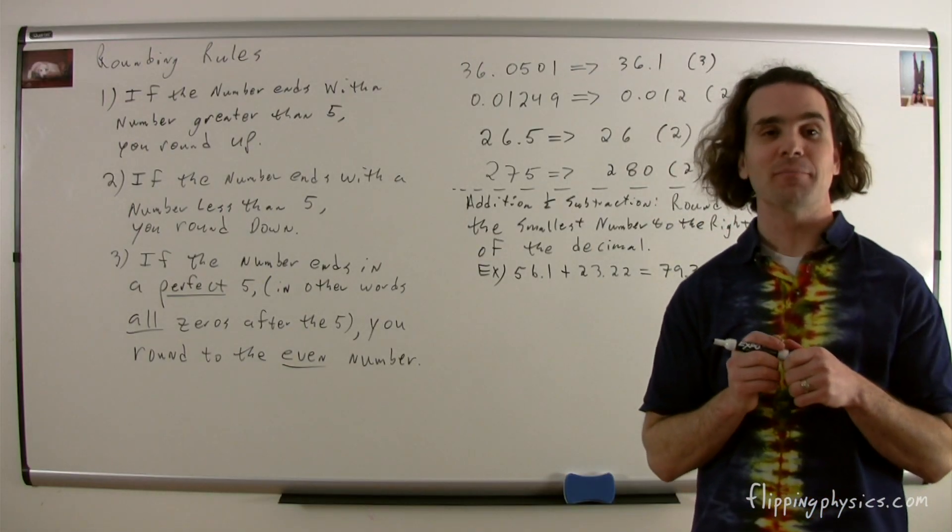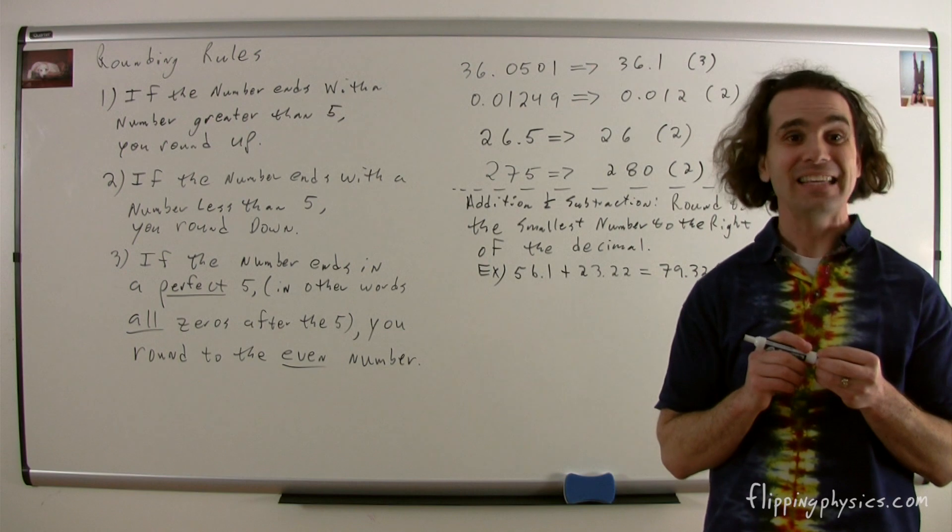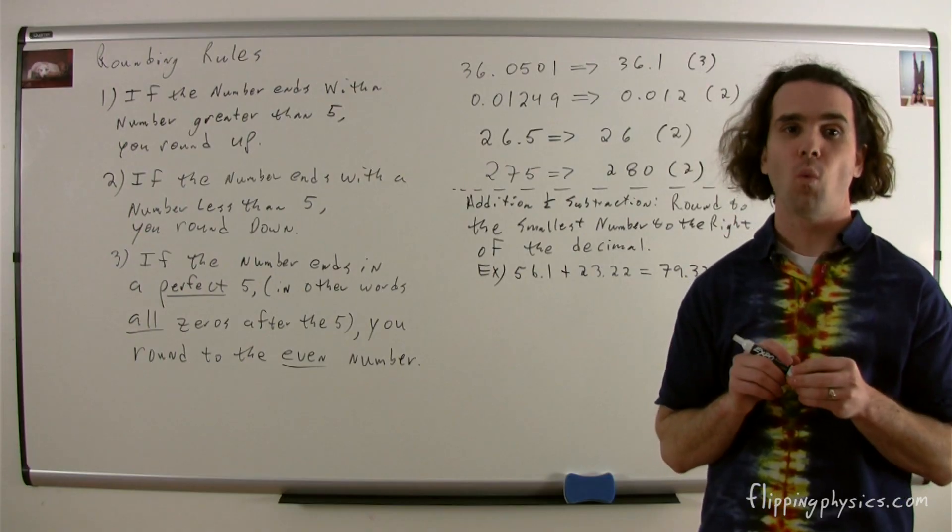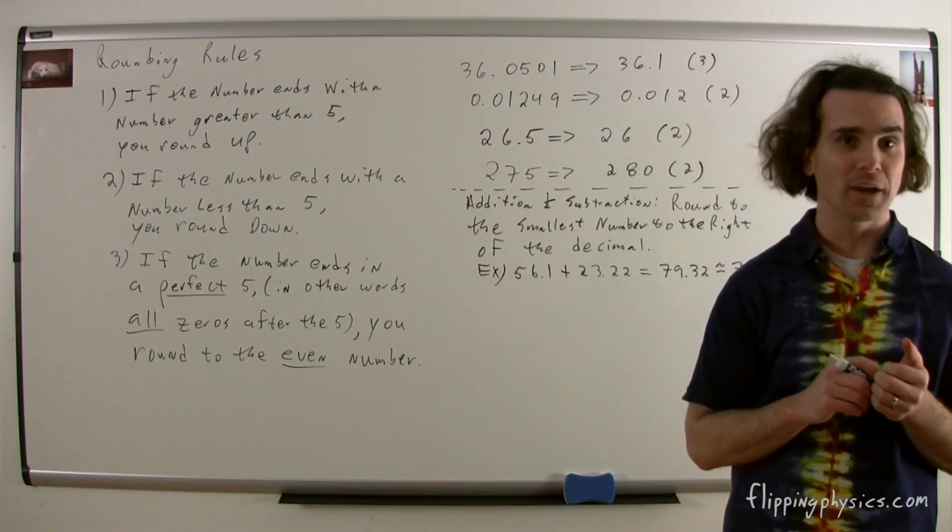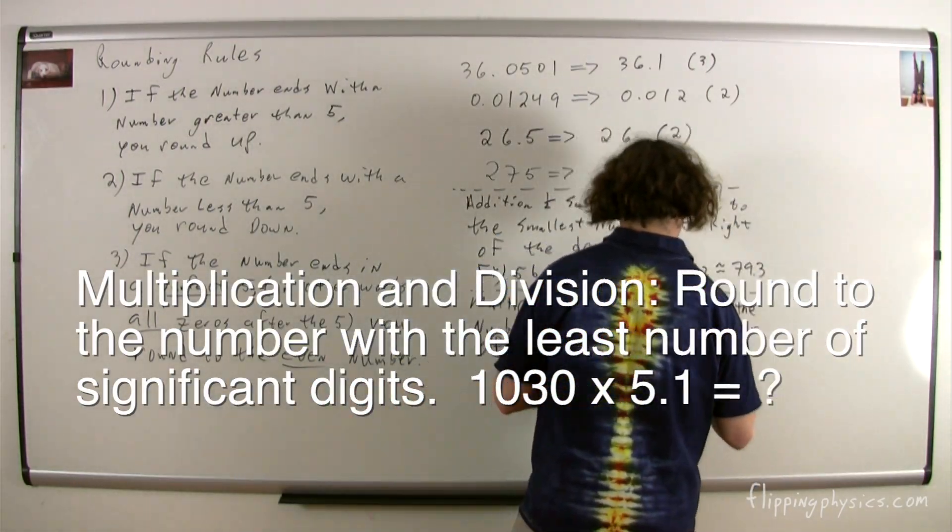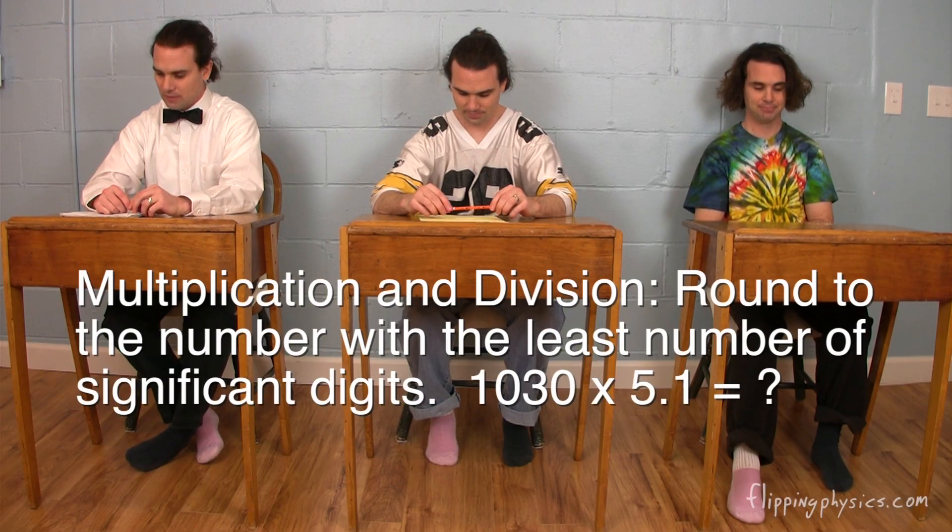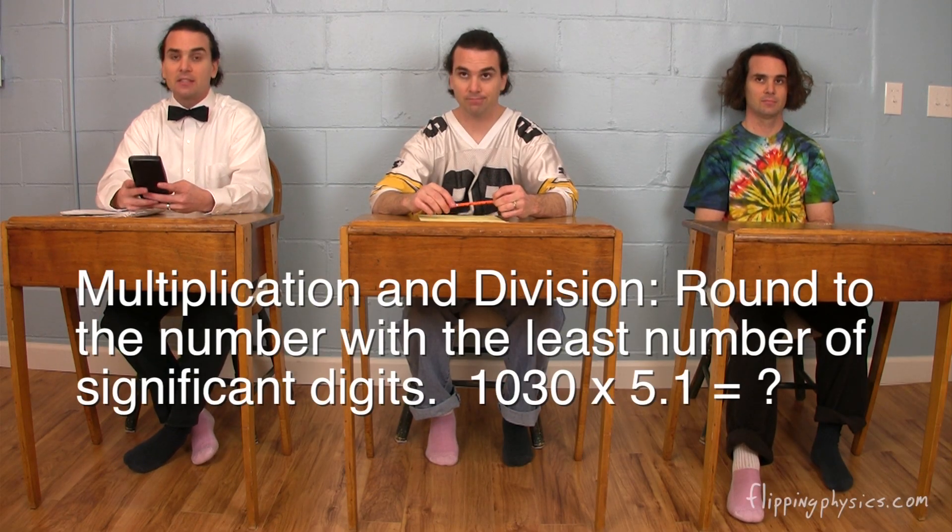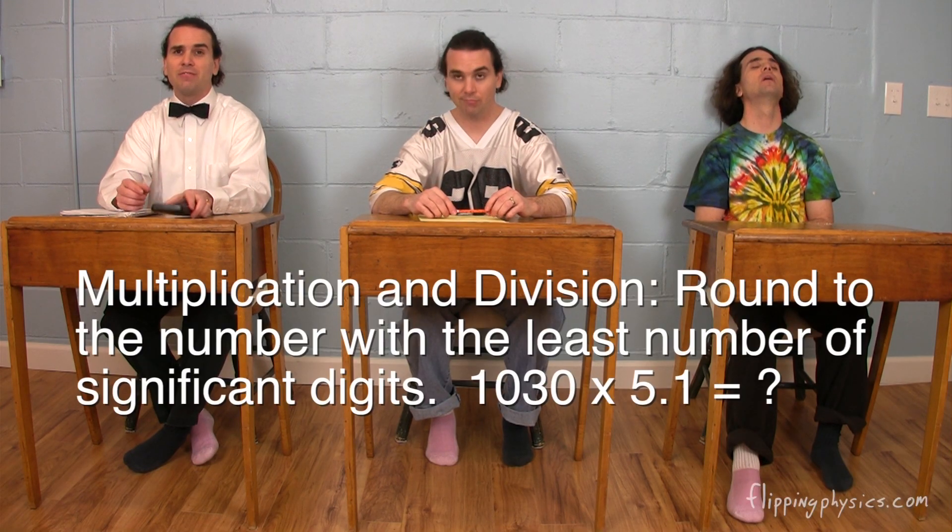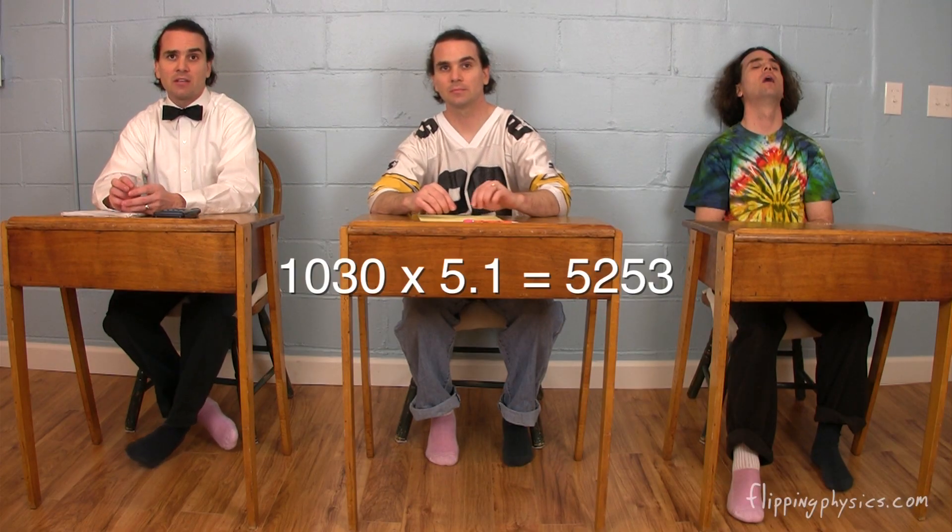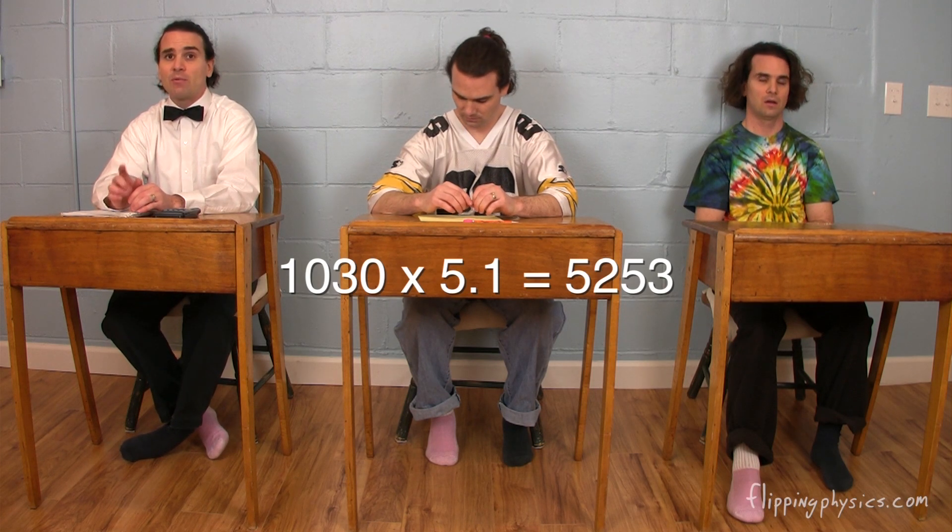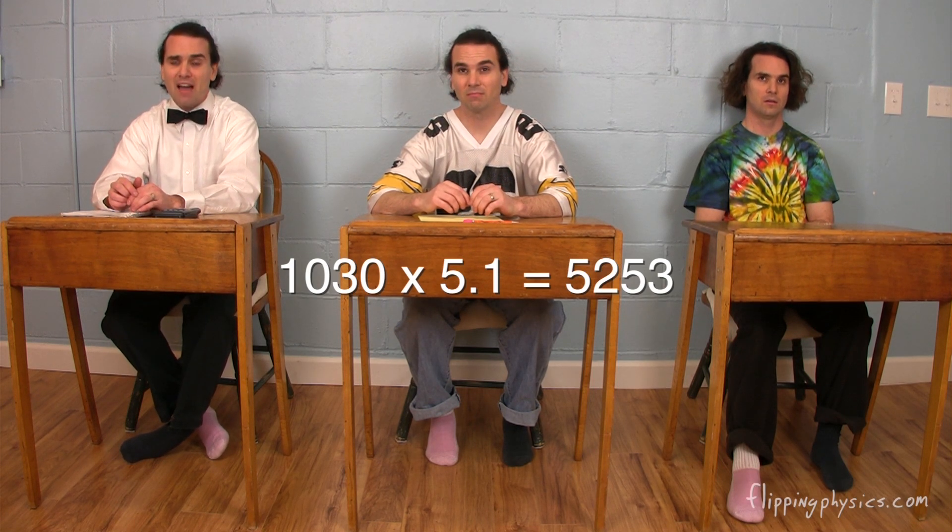You should also know that when we multiply or divide numbers, we end with a number that has the least number of significant digits from our measured or given values. For example, Billy, what is 1,030 multiplied by 5.1? Oh, yeah, well, I'm going to have to get my calculator out for that one. Let's see, 1030 times 5.1 is 5,253. But we need two significant digits because the least number was 2 from the 5.1. Therefore, because it ends in 5, we round to the even number, and the answer is 5,200.